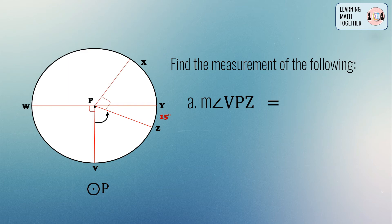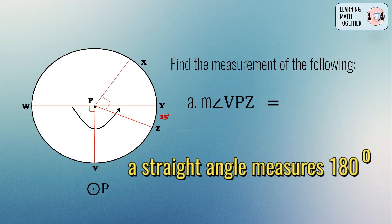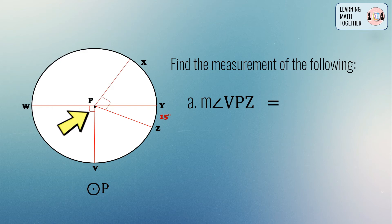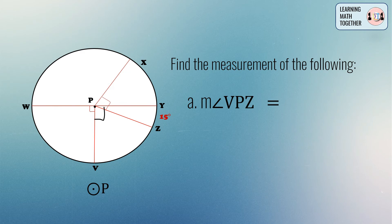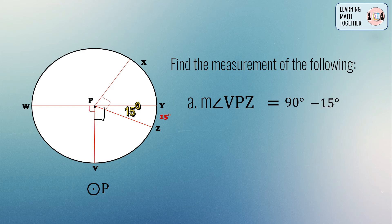To find the measurement of angle VPZ, notice that we have a straight angle WPY, and a straight angle measures 180 degrees. Given that angle VPW is equal to 90 degrees because it is a right angle, the remaining portion on that side is also 90 degrees. The intercepted arc of angle YPZ is equal to 15 degrees, so angle YPZ is also 15 degrees. Subtracting: 90 degrees minus 15 degrees gives us angle VPZ equal to 75 degrees.